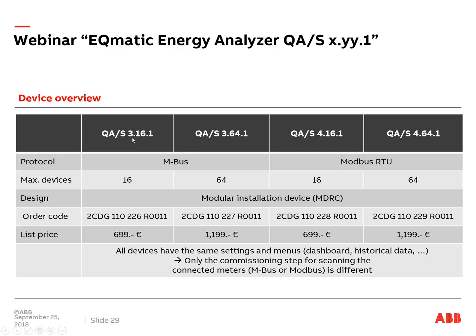Here is an overview of our four available energy analyzers: last year we launched QAS3 for MBUS with 16 or 64 MBUS devices, and now our new QAS4, 16 or 64, with Modbus RTU bus. Both have the same housing — modular DIN-rail components — with different order numbers. For commissioning, regardless of Modbus or MBUS, everything is the same: same settings, same menus. For the end user there is no visible difference between Modbus and MBUS. Only during commissioning — the scanning step — is there a difference in how MBUS or Modbus meters are detected.